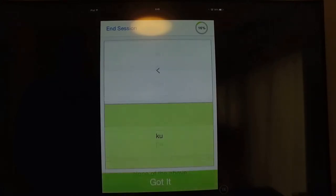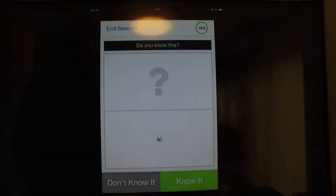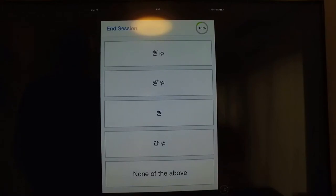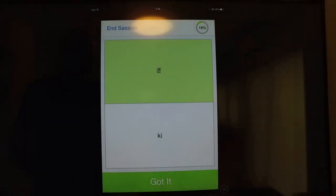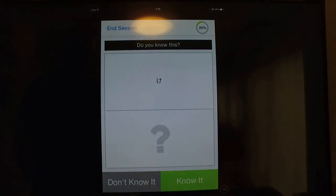Ku, I got it. Ku. Do you know this one? I know it. Is it kyu, kya, no, ju, ja, ki, or hya? Well, obviously it's this one because we're not studying those up there. All right, it's ki. I got it.